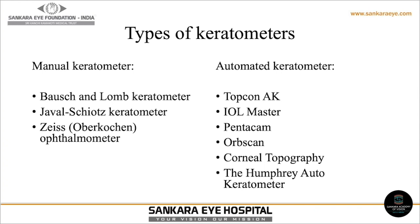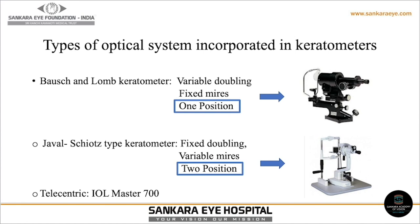The optical system incorporated in the Bosch and Lomb keratometer is a one-position keratometer, where double images are produced side by side as well as at 90 degrees from each other. The principal meridians are assumed to be at right angles to each other, with a fixed object size, variable image size, and variable doubling. This is exactly the opposite in the Jawal-Schiats type, which is a two-position keratometer requiring rotation about the axis to measure each of the principal meridians.